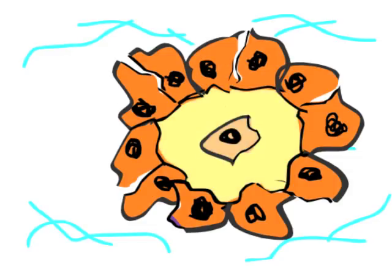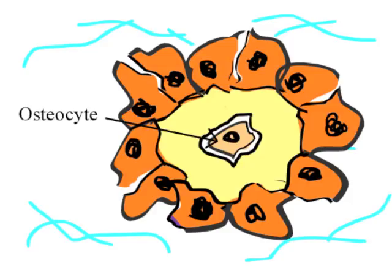As the animation portrays, osteoblasts, when surrounded by a calcified bone matrix, can differentiate further into osteocytes, which house themselves in hollowed out living spaces called lacunae. These cells support the bone in maturity.